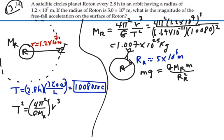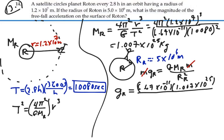Alright, so we get rid of our mass and we're left with the gravitational acceleration at the surface of Roton. So the gravitational acceleration at the surface of Roton is equal to 6.67 times 10 to the minus 11 for our big G, we just figured out the mass of Roton 1.007 times 10 to the 25 over the radius of Roton which is 5 times 10 to the 6 and we have to square that